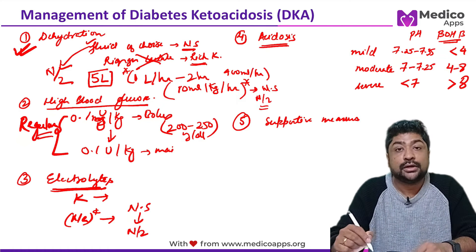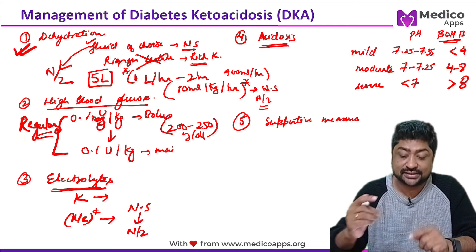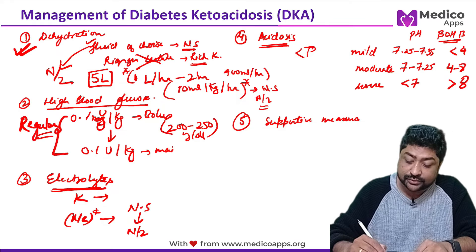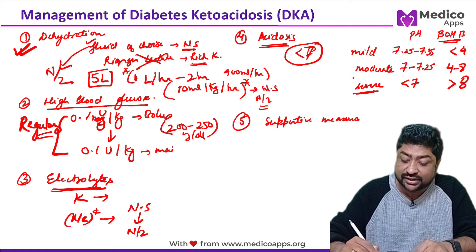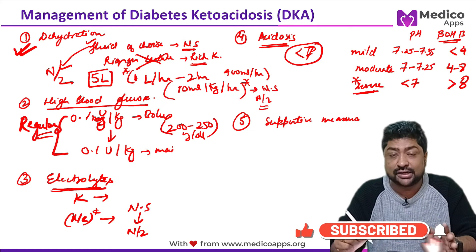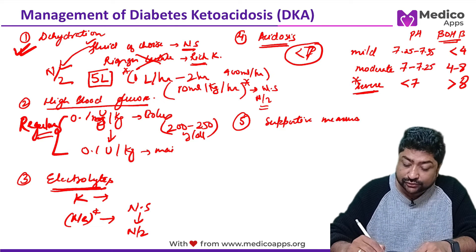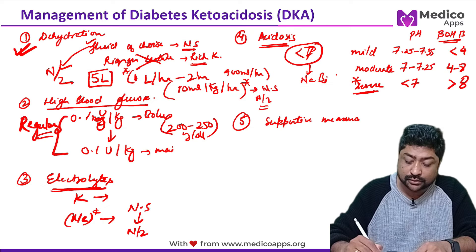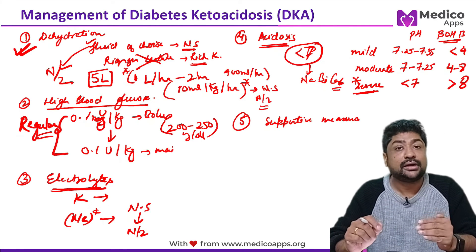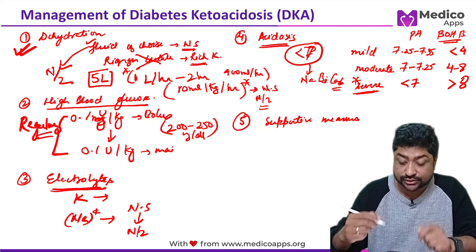For acidosis: as you treat DKA, most acidosis corrects by itself. You only need to treat acidosis if pH is less than 7 — that is, in the severe category only. For pH greater than 7, acidosis self-corrects with treatment. When treatment is needed, sodium bicarbonate (soda bicarb) is used.